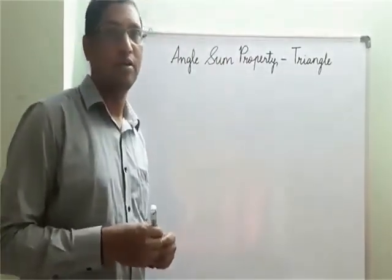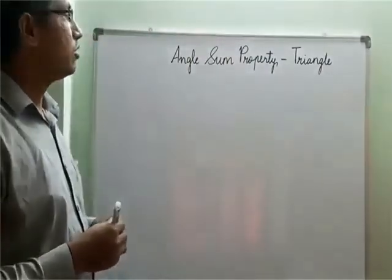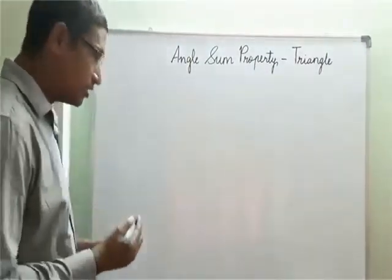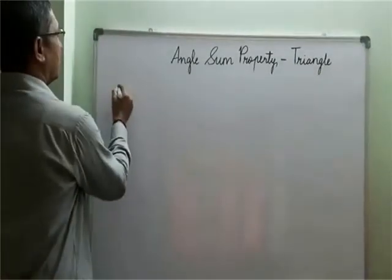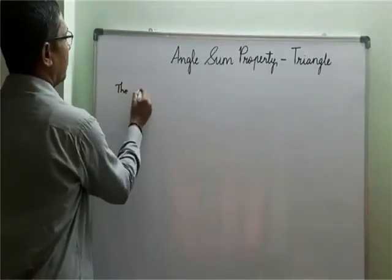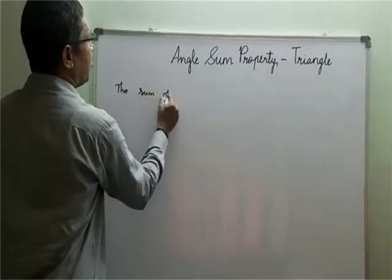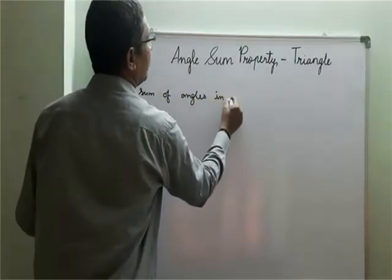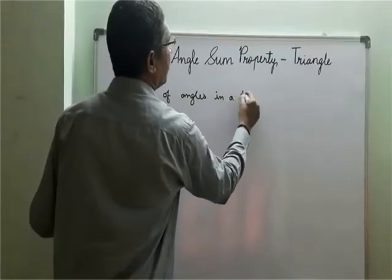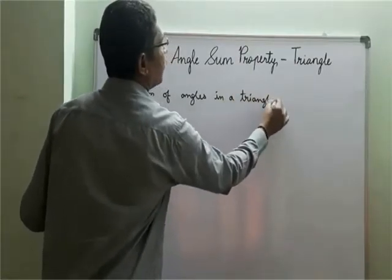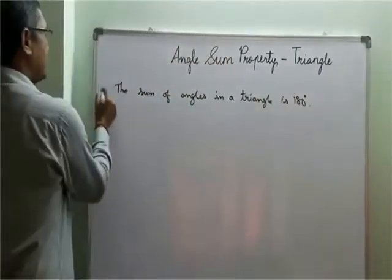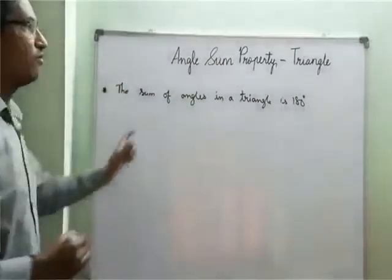We have already learnt about the Angle Sum Property, right? So what actually it states, the sum of angles in a triangle is 180 degrees. So this is actually the statement of Angle Sum Property.